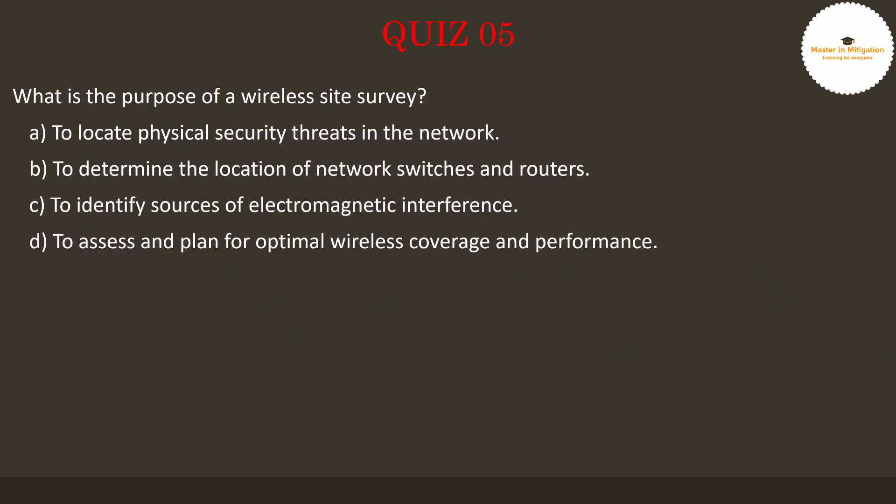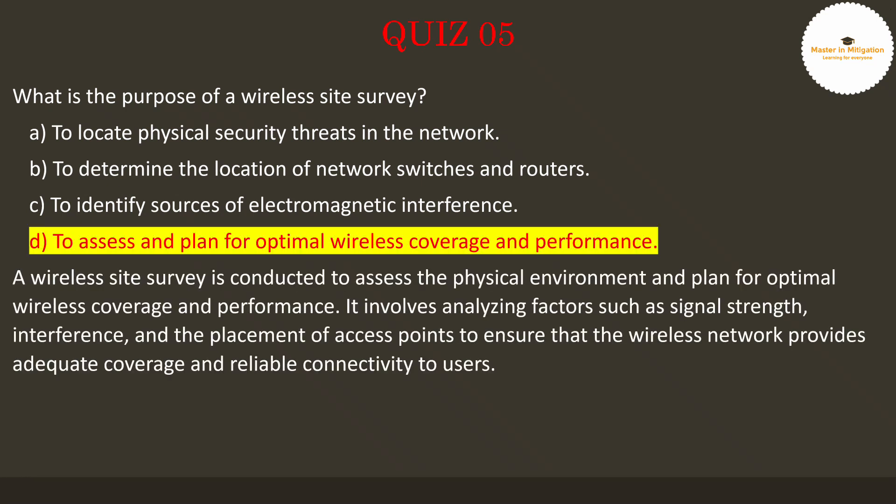Let's move on to the next question. Question 5: What is the purpose of a wireless site survey? Pause the video now to select the best answer. The answer is D: to assess and plan for optimal wireless coverage and performance. A wireless site survey is conducted to assess the physical environment and plan for optimal wireless coverage and performance. It involves analyzing factors such as signal strength, interference, and the placement of access points to ensure that the wireless network provides adequate coverage and reliable connectivity to users.